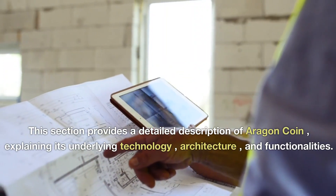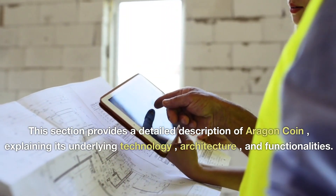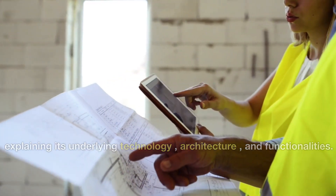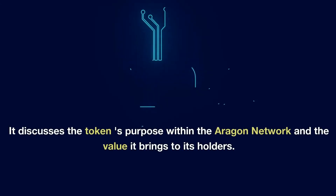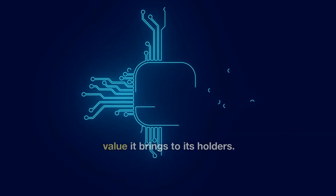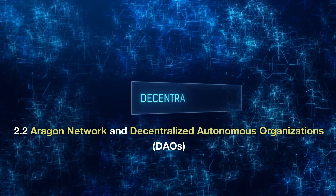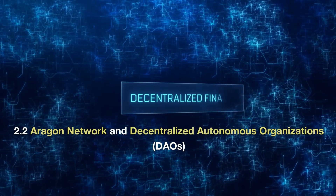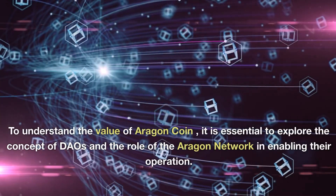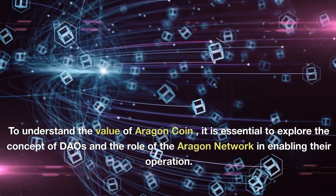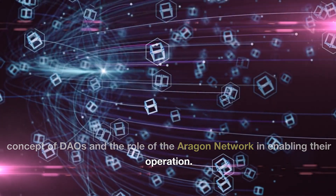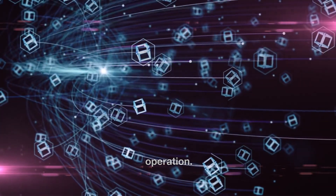Introduction: 1.1 Background — The introduction provides an overview of Aragon Coin and its significance in the broader blockchain and cryptocurrency ecosystem, highlighting the growing interest in decentralized autonomous organizations (DAOs) and the role of the Aragon Network in enabling their creation and management. 1.2 Objectives — This section outlines the objectives of the paper, which primarily focus on explaining the factors contributing to the value of Aragon Coin, examining both intrinsic and extrinsic aspects.